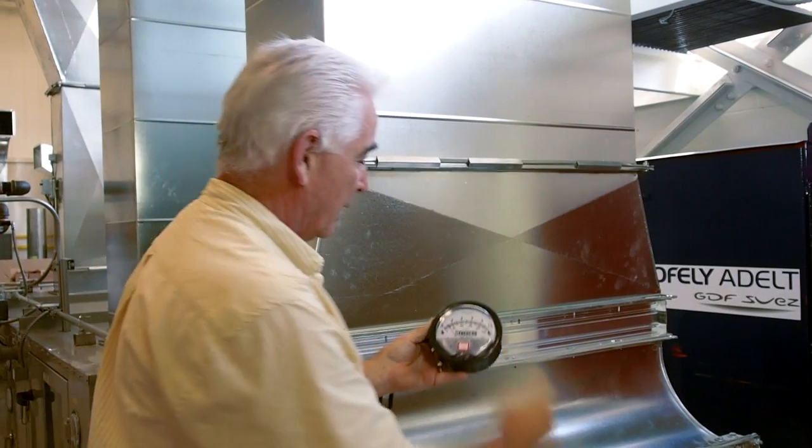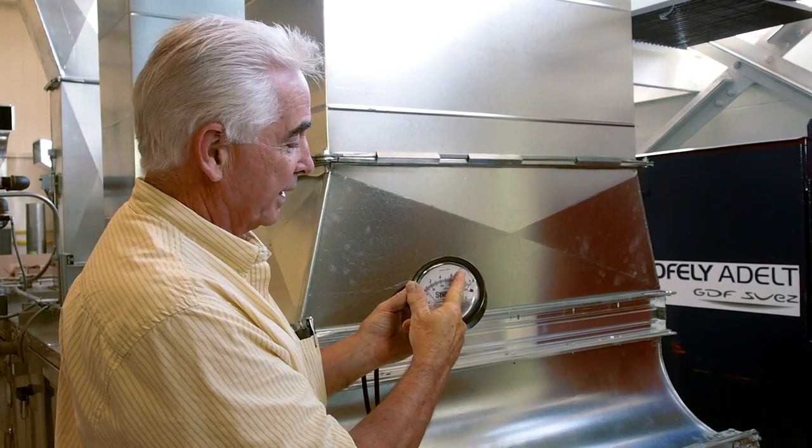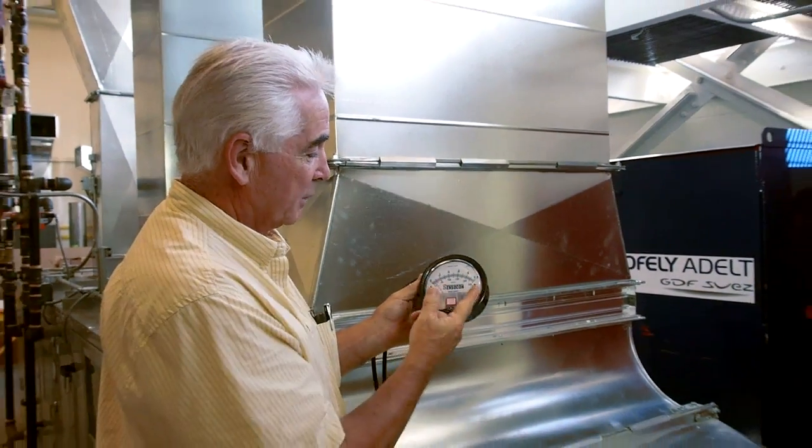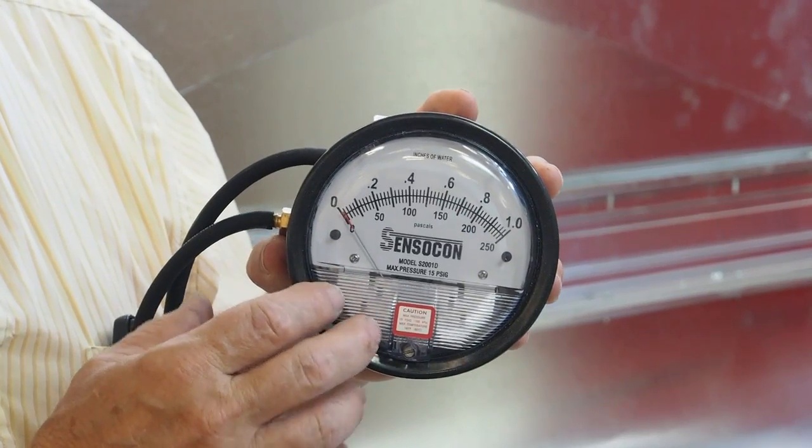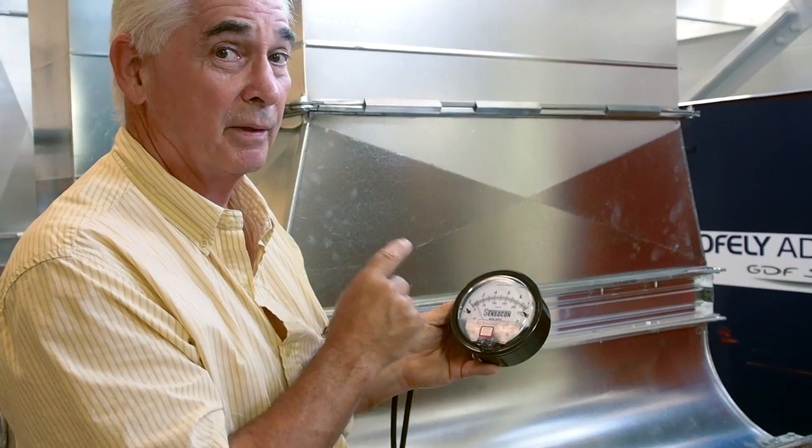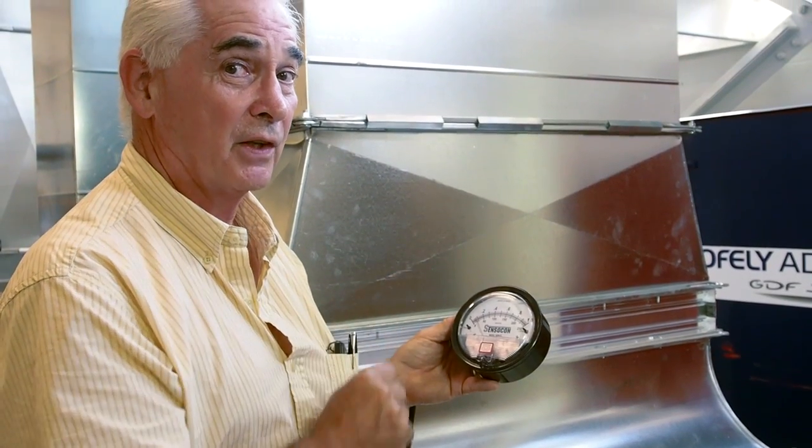And we hook the static to the bottom port. The top port is going to push the arrow this way. The bottom port is going to push it this way. So we're going to be left with a reading in velocity pressure. Total pressure minus static pressure is velocity pressure.